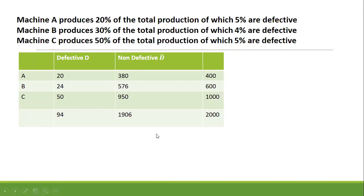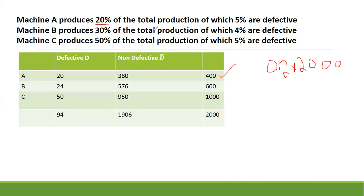Now, how do we get these numbers from the table? For example, I will start with 400. Here, we have 20% are from A. So, 20 divided by 100 gives 0.2. We multiply it by the total, which is 2000, and we get 400. Similarly, from machine B, we have 30%. We multiply 0.3 by 2000 and get 600. And for machine C, 50%: we multiply 0.5 by 2000 and get 1000.